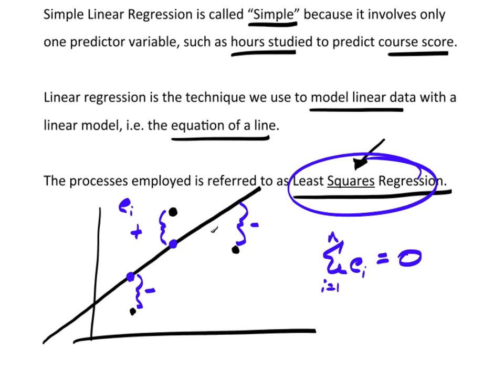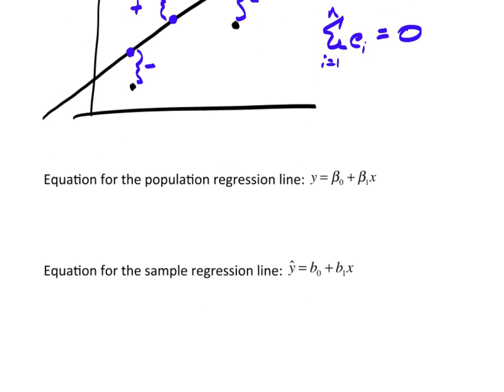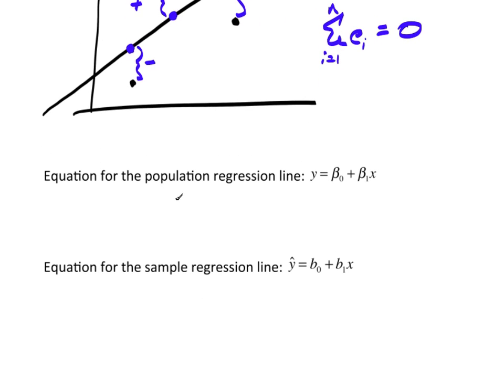So least squares regression finds the equation of this line that balances out these positive and negative errors to make sure that they're zero. Now, the equation for the population regression line is y equals beta naught plus beta 1x.